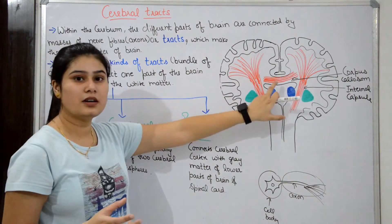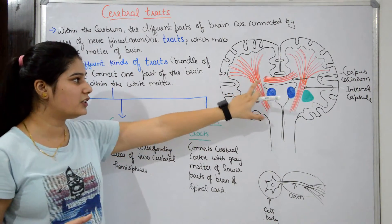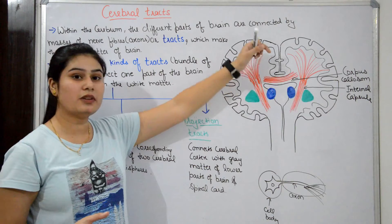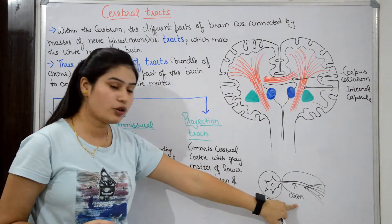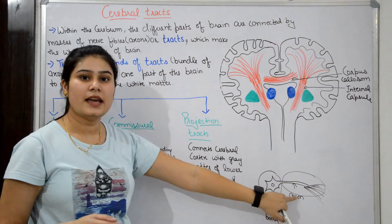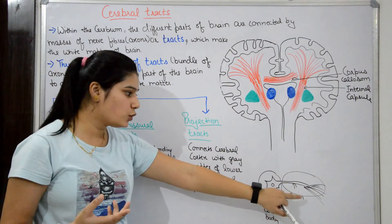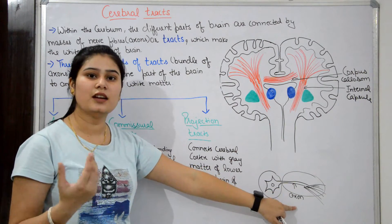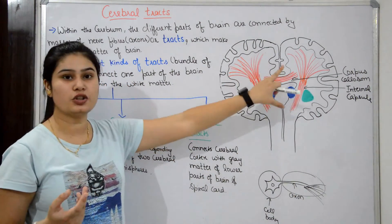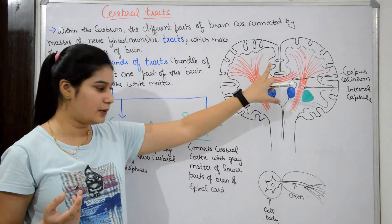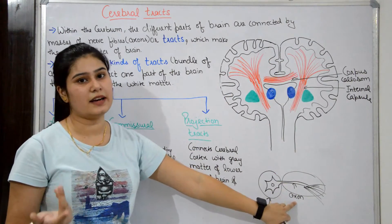The outer cortex of the cerebrum is made from cell bodies — that is the gray matter. And the inner portion of the cerebrum, deep within, is composed of axons, which are also called nerve fibers. So the inner portion of the cerebrum is white matter.